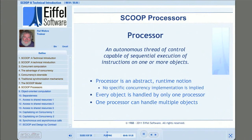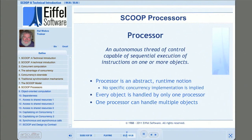In traditional sequential Eiffel, there's only one processor which handles all runtime objects in the whole system. SCOOP broadens this notion by allowing some objects to be handled by their own processors, consequently opening up the possibility of concurrent execution. All calls requested of a particular SCOOP processor will execute in the order in which they were requested. So SCOOP, to some extent, can be viewed as imposing order on an otherwise unordered world of concurrent execution.